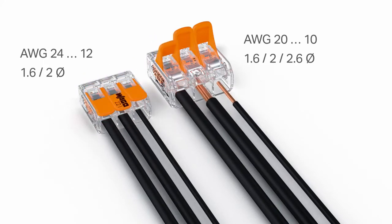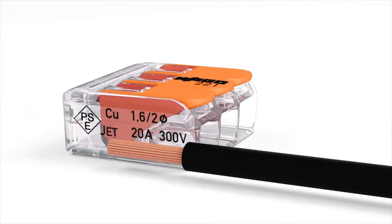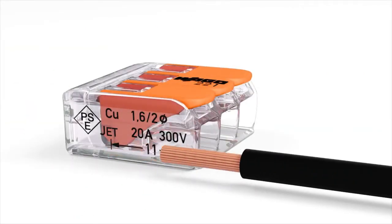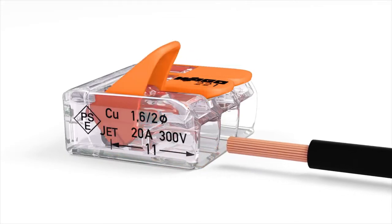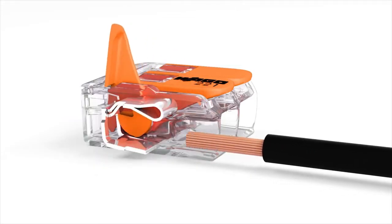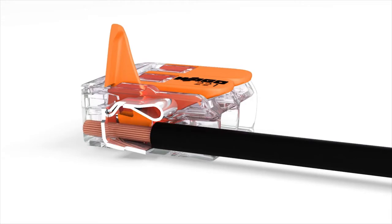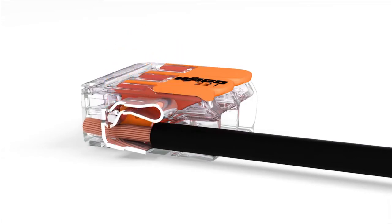Wiring is simple. First, strip the conductor according to the strip-length guide printed on the side of the connector housing. Open the clamping unit via the easy-to-use lever, insert conductor, then simply lower the lever to close the clamp.